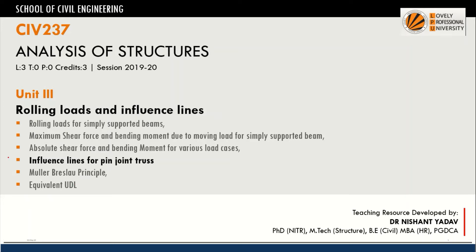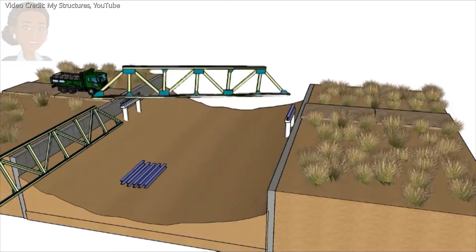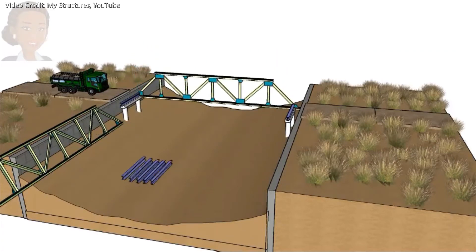This video lecture is about influence lines for pin jointed trusses. Before we move ahead, we will see how load distribution takes place in a truss. Suppose we want to build a truss bridge that provides a passage for vehicles across a canal. The structure is constructed so that the vehicle load transfers to the two side trusses via a series of beams supporting the bridge deck.